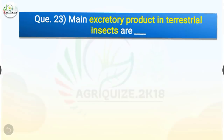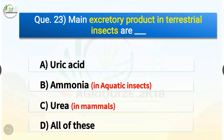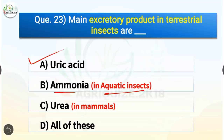Question number 23. The main excretory product in terrestrial insects is what? The options are uric acid, ammonia, urea, or all of these. The correct answer is option A, uric acid. The main excretory product in terrestrial insects is uric acid, whereas the main excretory product in aquatic insects is ammonia, and in mammals it is urea.